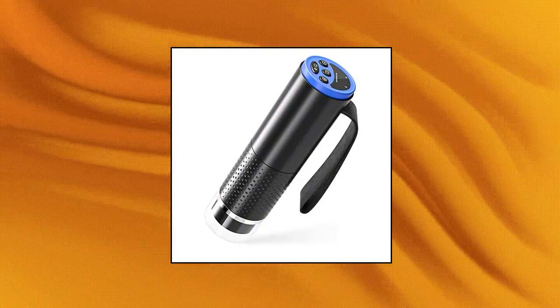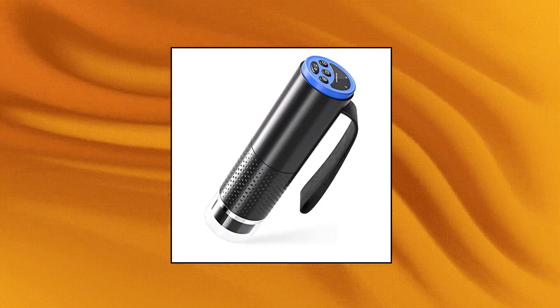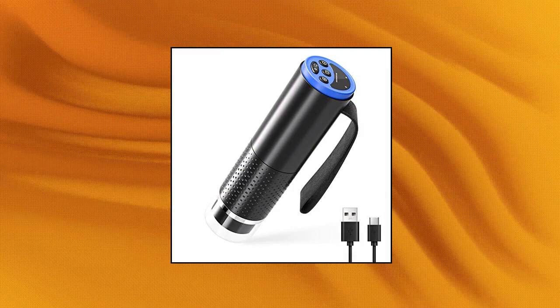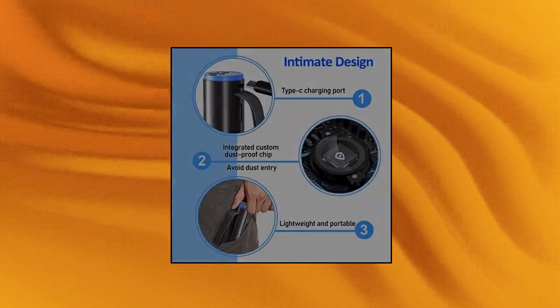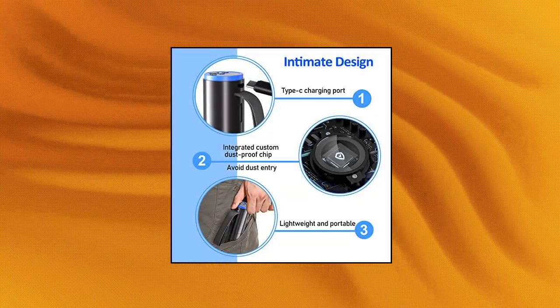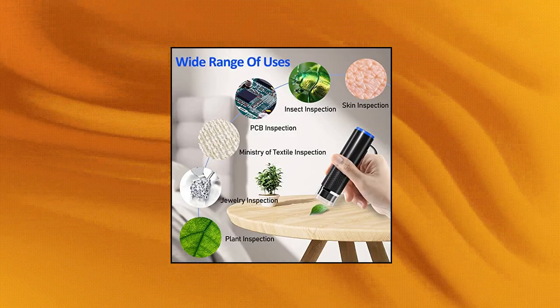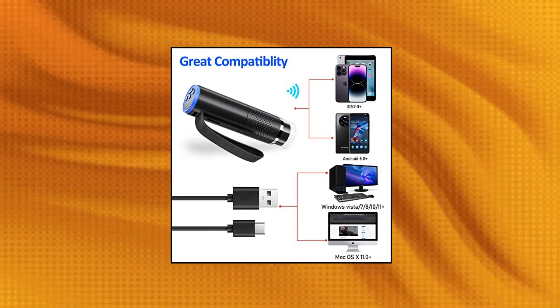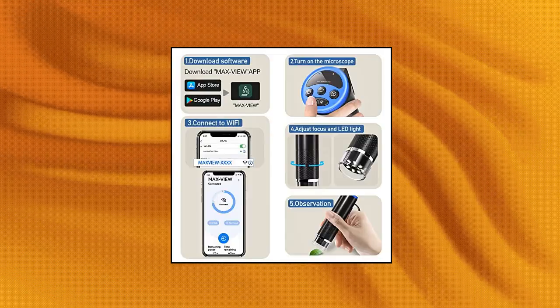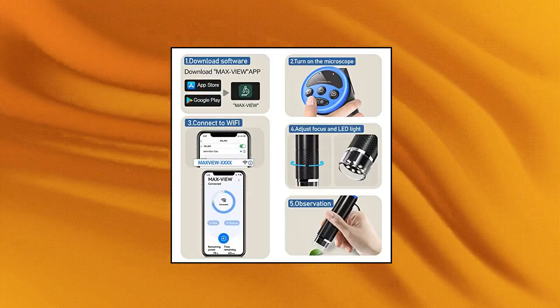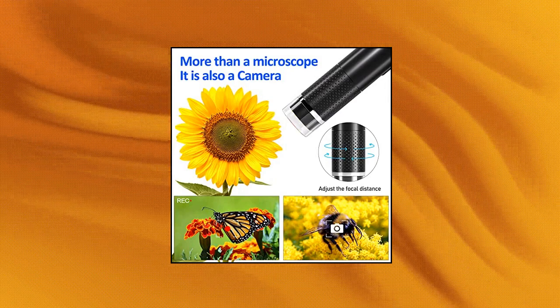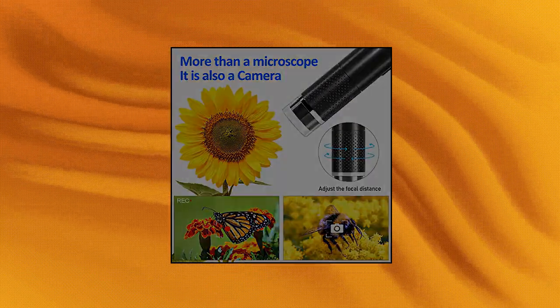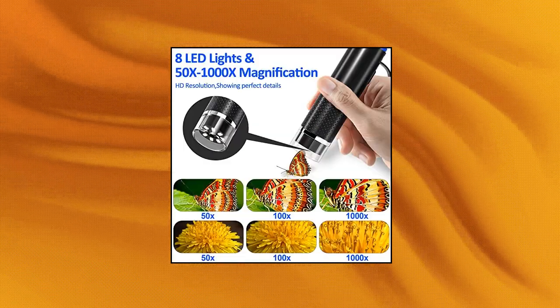Wireless Digital Microscope SkyBasic 50x-1000x Magnification Wi-Fi USB HD Portable Handheld Pocket Microscope Camera with 8 Adjustable LED Compatible with iPhone, iPad, Android, Windows, Mac, Computer. Wi-Fi and USB Microscope. This is a wireless portable digital microscope with a Wi-Fi hotspot, designed to connect to Android or iOS mobile phones and tablets, and also supports USB to connect to Windows or Mac computers for easy use in different fields.